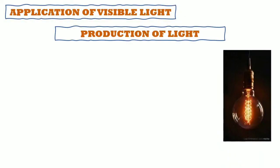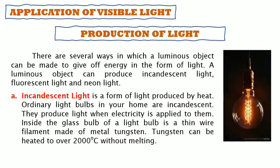We now look at the application of visible light and the production of light. A luminous object can produce incandescent light, fluorescent light, and neon light. Incandescent light is produced by heat — ordinary light bulbs are incandescent and produce light when electricity is applied. Inside the glass bulb is a thin wire filament made of tungsten, which can be heated to over 2000 degrees Celsius without melting.